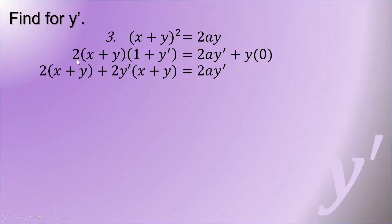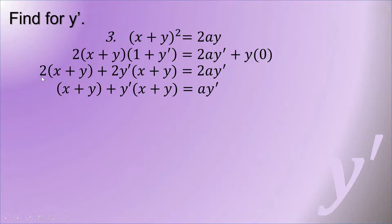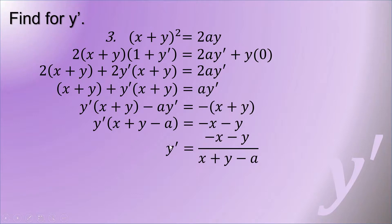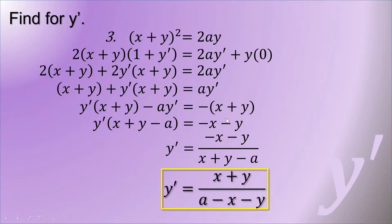Distributing 2 and the quantity x plus y to 1 and y prime gives 2 times the quantity x plus y, plus 2y prime times the quantity x plus y. Dividing all terms by 2 and transferring x plus y from left to right gives negative x plus y. Factoring out y prime gives y prime times x plus y minus a. Distributing negative 1 gives negative x minus y. Dividing both sides and simplifying, y prime equals the quantity x plus y all over a minus x minus y.